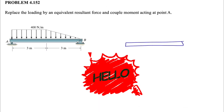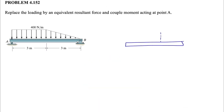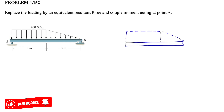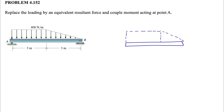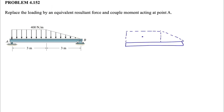Welcome back. In this question we need to replace the loading by an equivalent resultant force and a couple moment acting at point A. Let's start with the free body diagram and see how this load is affecting this beam. We have a rectangle on the left side of this beam and a right triangle on the right side.